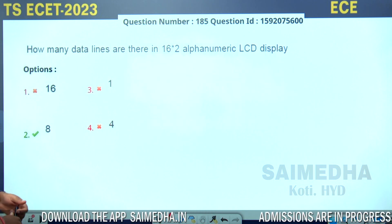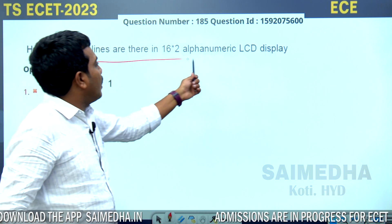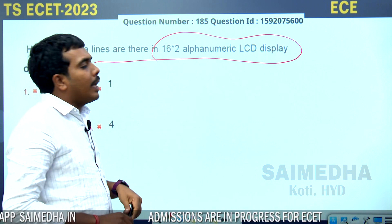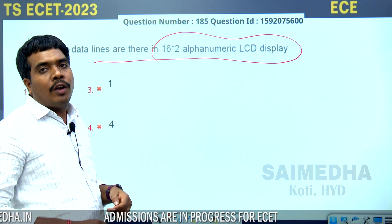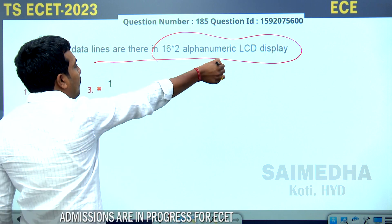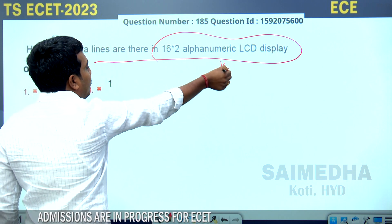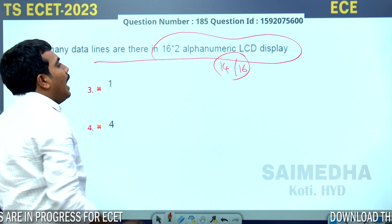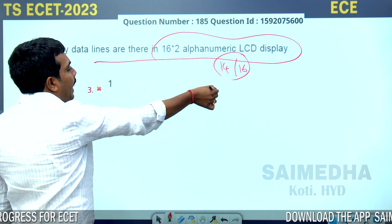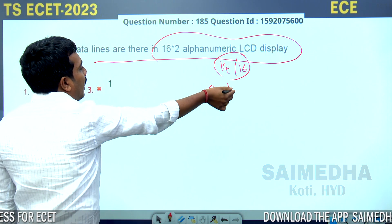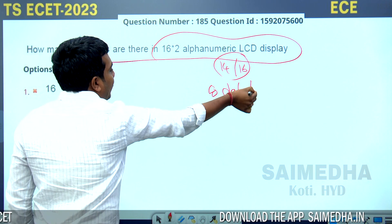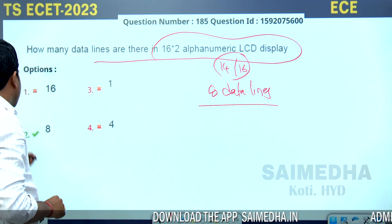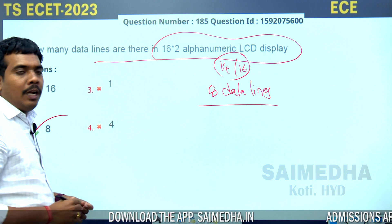The question is how many data lines are there in a 16x2 alphanumeric LCD display. A 16x2 LCD display may have 14 pins or 16 pins, but the LCD display always consists of 8 data lines. Therefore, the correct answer is option 2.